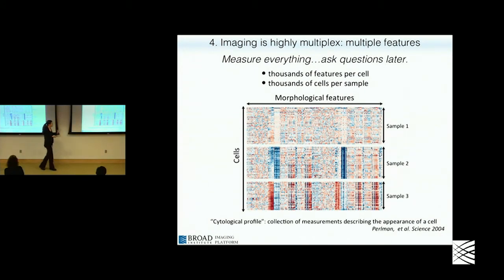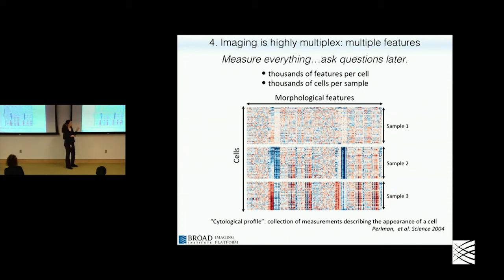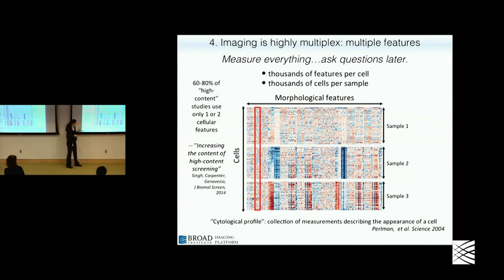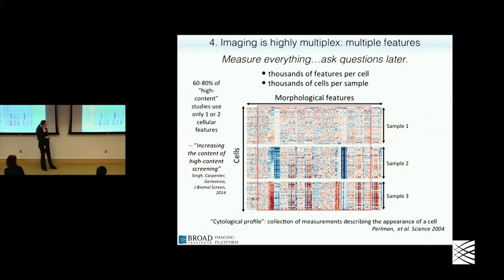With each individual stain you can measure multiple features. Our informal motto in the lab is to measure everything and ask questions later. There are thousands of features you can measure for each cell that you've imaged. If you have thousands of cells per sample, you get an enormous amount of data from a single experiment. Here I'm showing just three samples — in a high-throughput experiment with a hundred thousand samples this would be a huge data matrix with lots of individual cells and thousands of metrics measured for each.